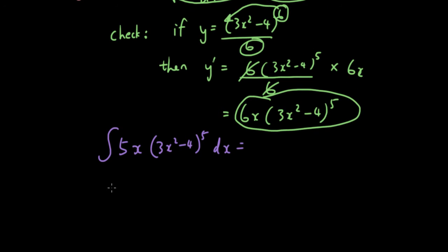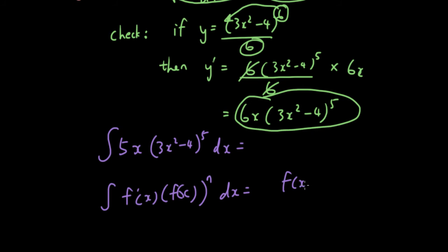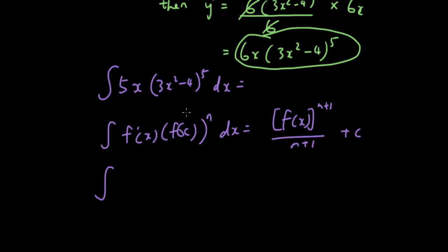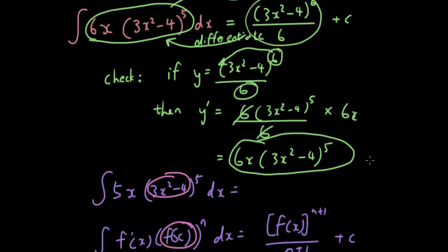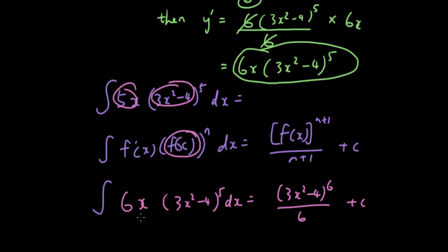You still write the formula down: the integral equals f(x)^(n+1) / (n+1) + c. You substitute f(x) into the formula, so you write 3x² - 4 to the power of 5. Then you differentiate the inside and write it at the front: 6x. Following the formula through, that gives (3x² - 4)^6 / 6 + c. But here's the problem — the question says 5x, not 6x. So what do you do? You need to find a way to turn this 6 into a 5.